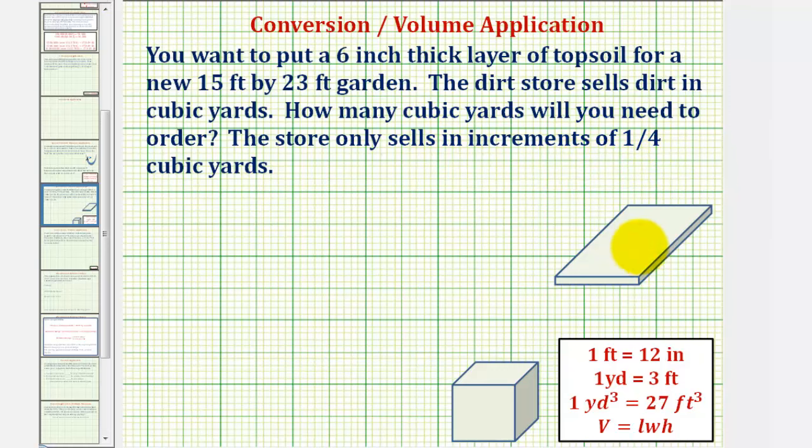So if we think of this as the garden, let's label the dimensions. This would be 15 feet by 23 feet. The thickness would be six inches, or this length here.